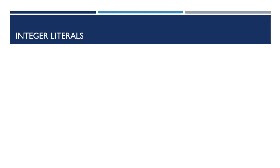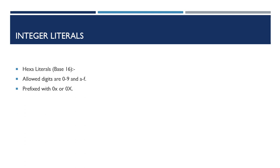The other notation we have is hexadecimal literals. In hexadecimal, the allowed digits are 0 to 9 and a to f. It is always prefixed with 0x in lowercase or 0X in uppercase — both are allowed. For example, int a = 0XABCD. It is prefixed with 0X and the values used come in the range of hexadecimal, so it is a valid value. The other example shown is also valid.